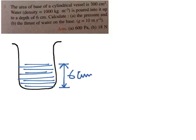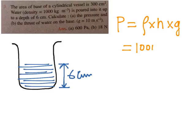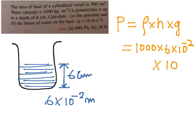The question is asking for the pressure and thrust of water at the base. We know from the formula of pressure: P is equal to rho into H into g, where rho is nothing but density. The density of water is given as 1000 kg/m³. The height is given in centimeters, so we have to convert it to meters: six centimeters is six into 10 to the power minus two. G is taken as 10 meter per second square.